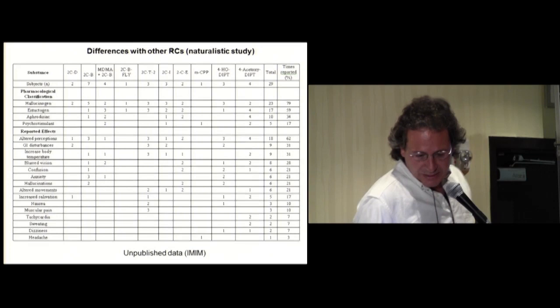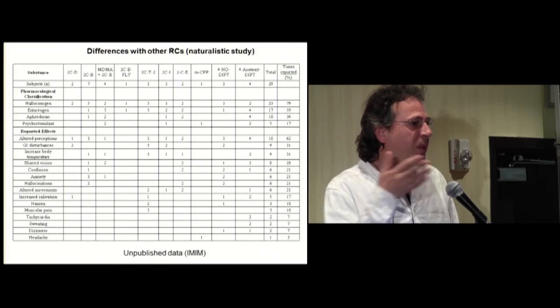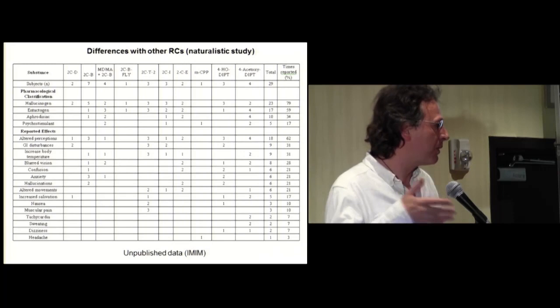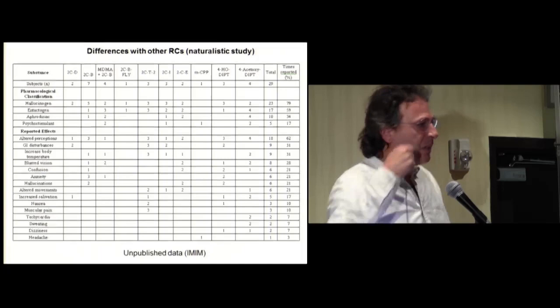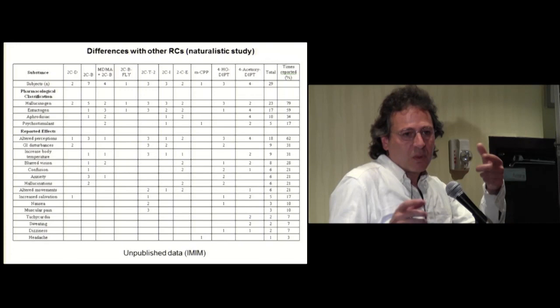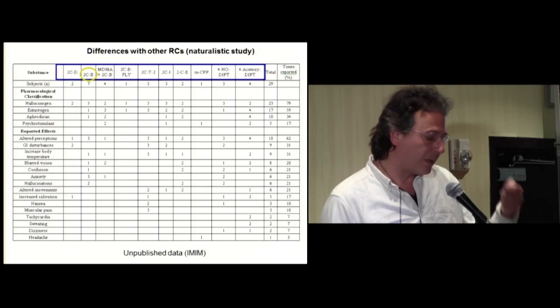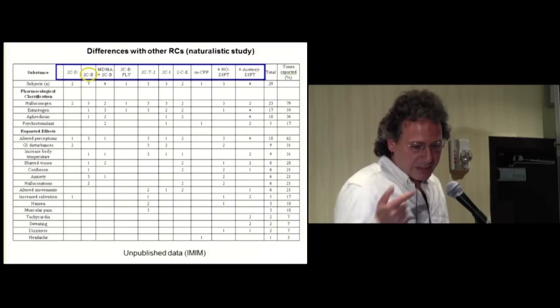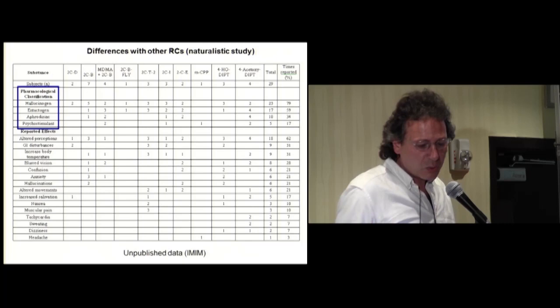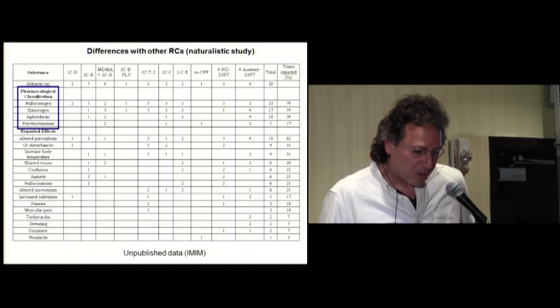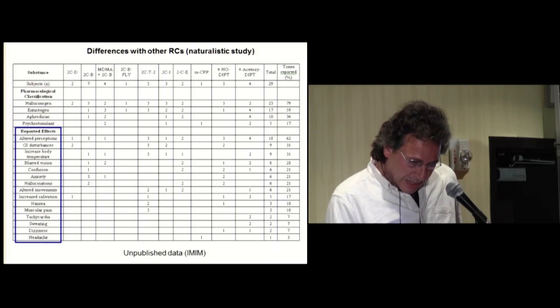In another study with unpublished data, again we asked volunteers, people that used to take different kinds of drugs in naturalistic contexts at their homes or wherever places, that when they are under the effects, they have to pee in a bottle and fill a little brief questionnaire. We compared, effectively, to be assured that they took what they said they took. And we asked the subjects also to classify the drug in one of three pharmacological classifications: hallucinogen, entactogen, aphrodisiac, psychostimulant, and asked them to report the main subjective effects.